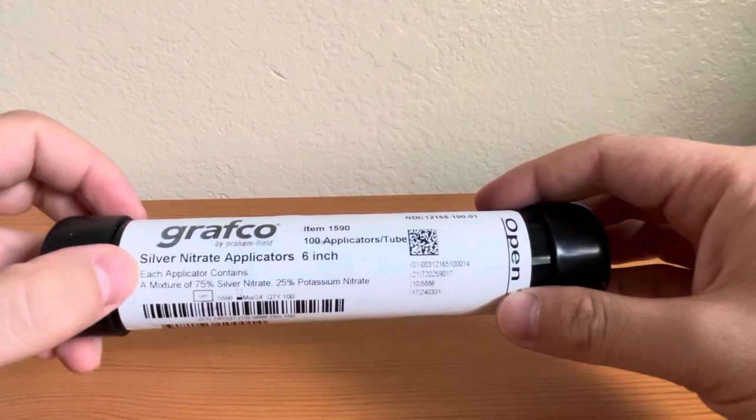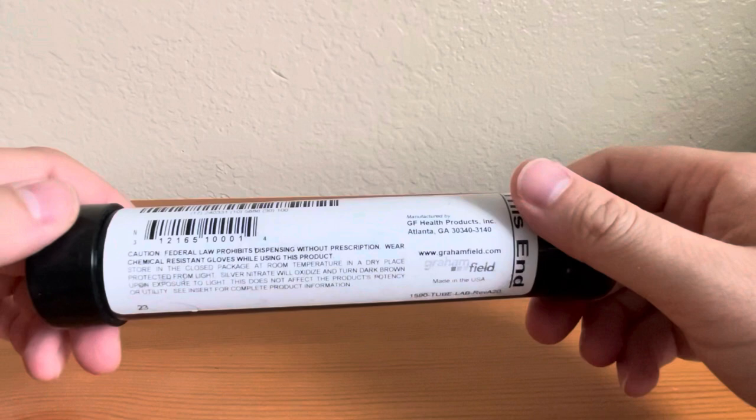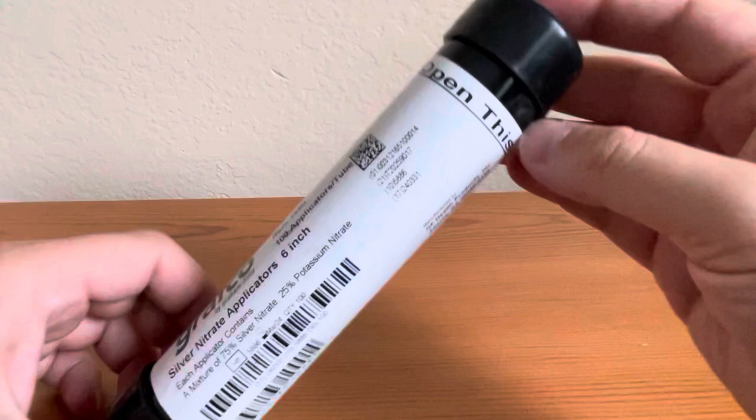Silver nitrate applicator sticks. Each silver nitrate stick contains 75% silver nitrate and 25% potassium nitrate. Indications for use include cauterization of skin or mucous membranes and for removing warts and granulated tissues.